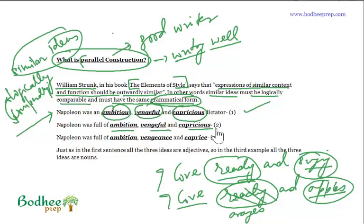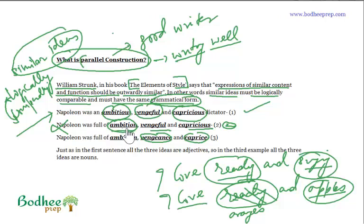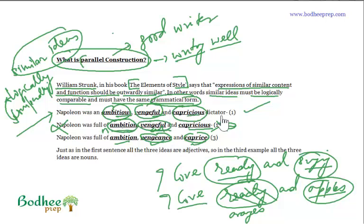Statement one says 'Napoleon was an ambitious, vengeful, and capricious dictator.' Statement two says 'Napoleon was full of ambition, vengeful, and capricious.' Now we have a problem — this sentence does not sound correct. It is awkward because in the first case we have a noun: 'full of ambition,' but then we have an adjective, then another adjective. So you cannot mix a noun with adjectives. Either all three are nouns, or all three are adjectives.